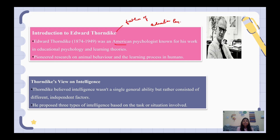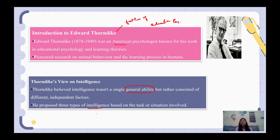E.L. Thorndike has told us that intelligence is not a general ability. Intelligence is not a single general ability; it is made up of different factors. He proposed three types of intelligence: social intelligence, abstract intelligence, and concrete intelligence — also called mechanical intelligence.